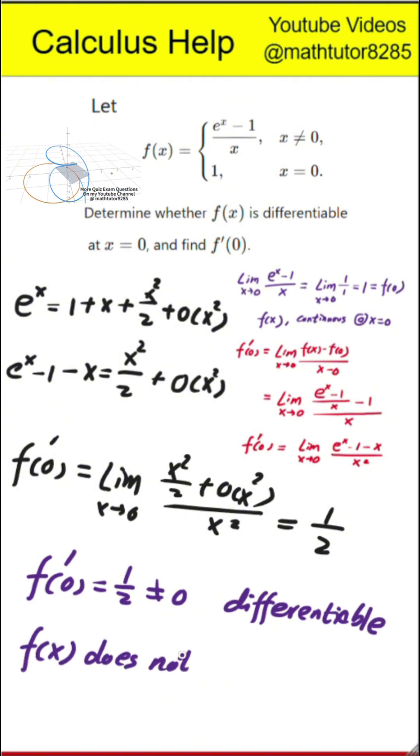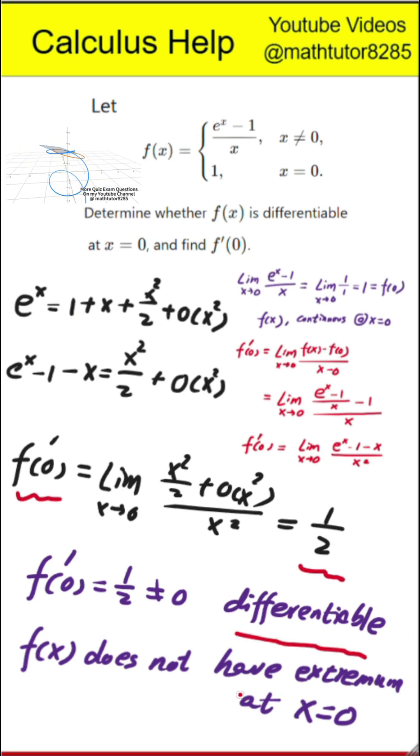Because the derivative is not 0, the function does not have a maximum or minimum there. Final answer, the derivative of f at 0 equals 1 half. The function is differentiable at x equals 0 and has no extremum at that point.